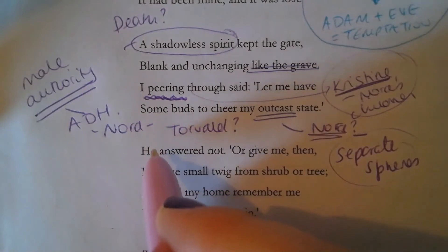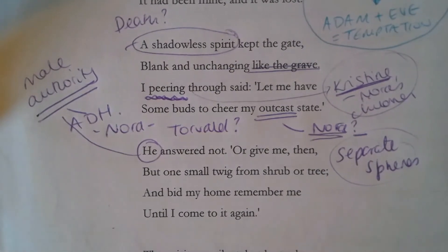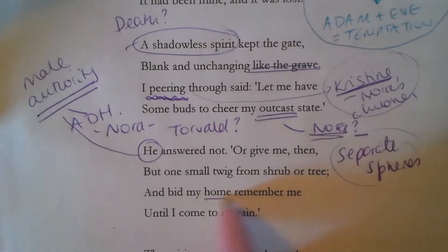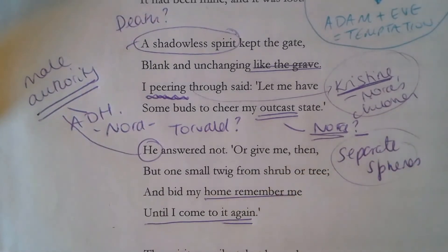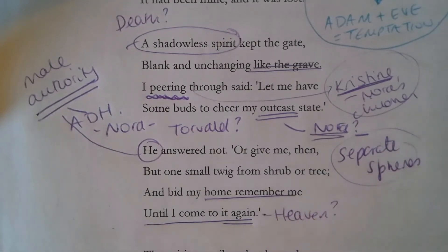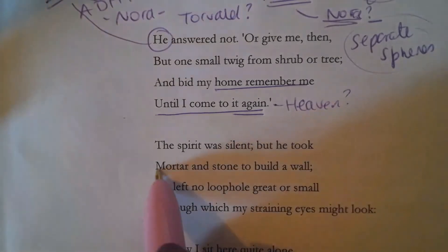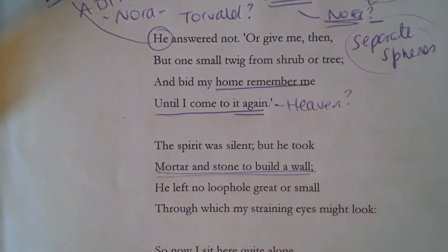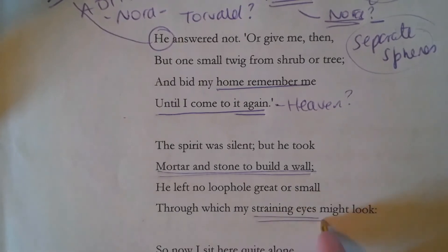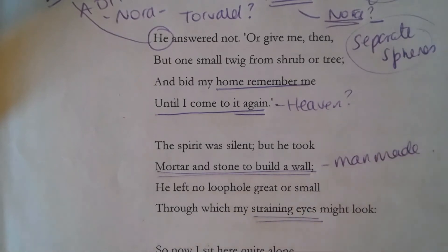We then have the confirmation that this is a masculine figure — the male authority figure 'answered not.' The line 'my home, remember me until I come to it again' is interesting: the fact that she's been there before leads some people to interpret this as heaven, the idea that she wants to return and that won't happen until she dies. We then have this rather passive-aggressive spirit who is now building a physical barrier so she can't even see, with 'straining eyes' — she's blocked from even seeing it, and there's this man-made wall.